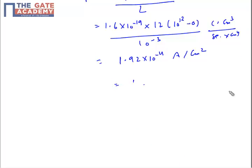I need to multiply by 10 raised to power 4 to convert from cm² to m². So it will be 19.2 ampere per meter square.